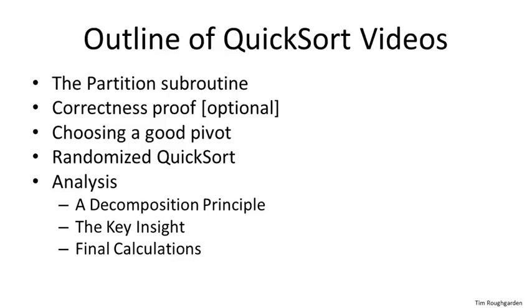In the first analysis video, I'll introduce a general decomposition principle of how you take a complicated random variable, break it into indicator random variables, and use linearity of expectation to get a relatively simple analysis. That's something we'll use a couple more times in the course, for example, when we study hashing. Then we'll discuss sort of the key insight behind the quicksort analysis, which is about understanding the probability that a given pair of elements gets compared at some point in the algorithm. That'll be the second part. Then there's gonna be some mathematical computations just to sort of tie everything together, and that'll give us the bound on the quicksort running time.